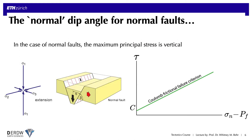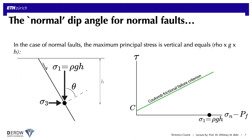Recalling again that in the case of normal faults, the maximum principal stress is vertical. This means that the maximum principal stress is equal to rho times g times h, where rho is the rock density, g is the acceleration of gravity, and h is the thickness of the rock column. So this is just the weight of the overburden that sigma 1 is equal to.